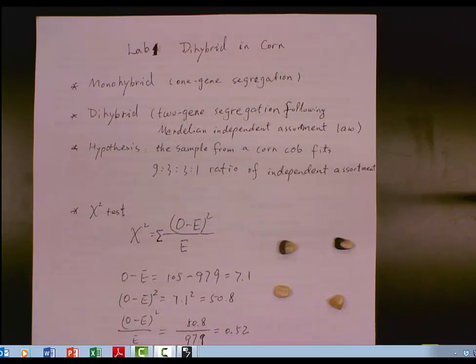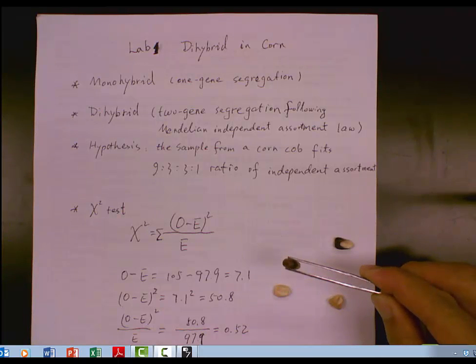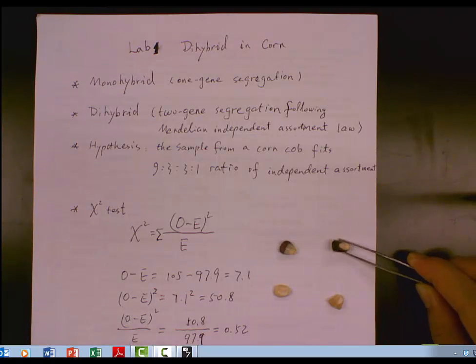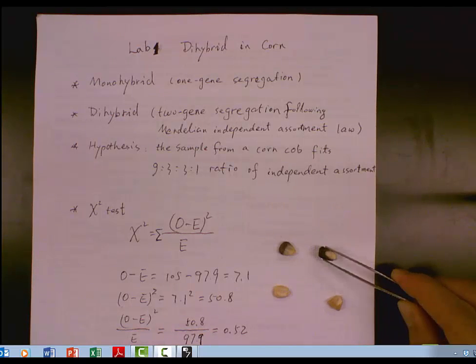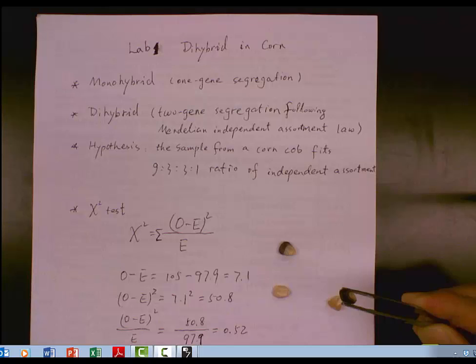The first one is called Color Dent, which is like this color starch, and there's the dent at the top. That's the first group. The second group is this colored shrinking or sugar. So you can see at the top,